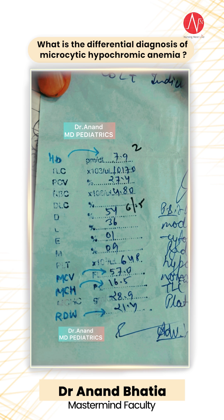The differential diagnosis of microcytic hypochromic anemia can be remembered with the mnemonic SITAL: Sideroblastic anemia, Iron deficiency anemia, Thalassemia, Anemia of chronic disease, and Lead poisoning.